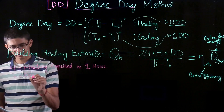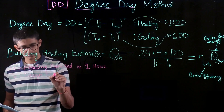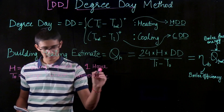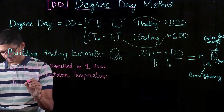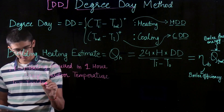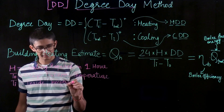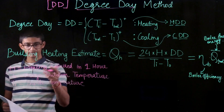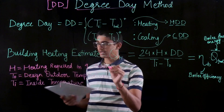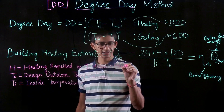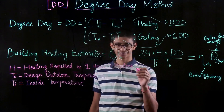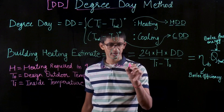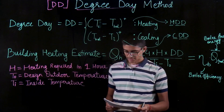T_out is the design outdoor temperature. T_in is the inside temperature, which is taken as 65°F — that is the balance temperature we want inside the room. H is the calculated heat loss of the building, meaning the required heating equals the heat loss. Whatever heat is lost must be compensated by heating.